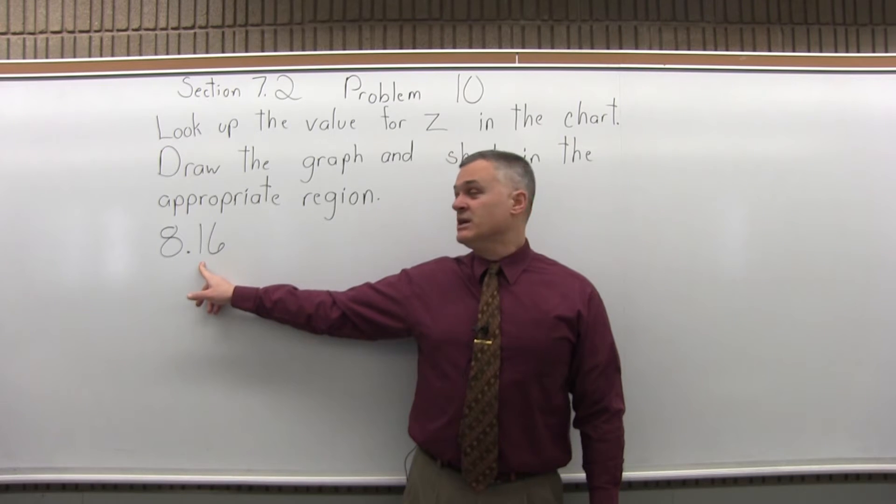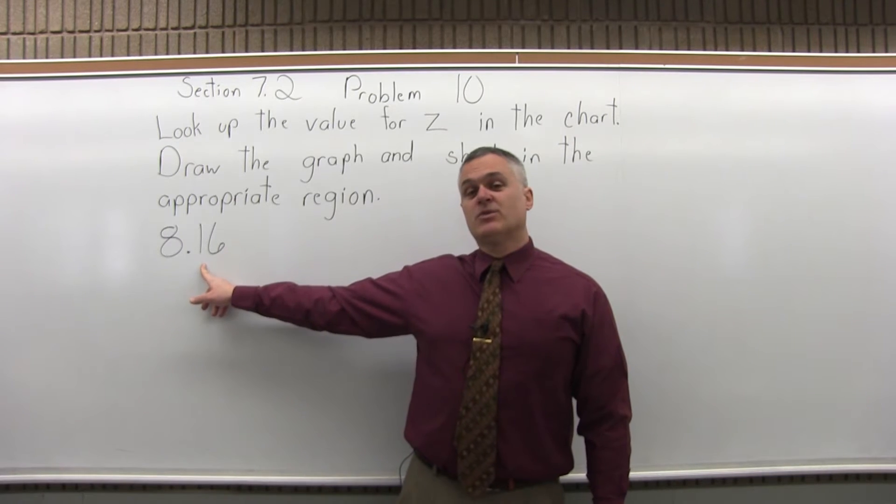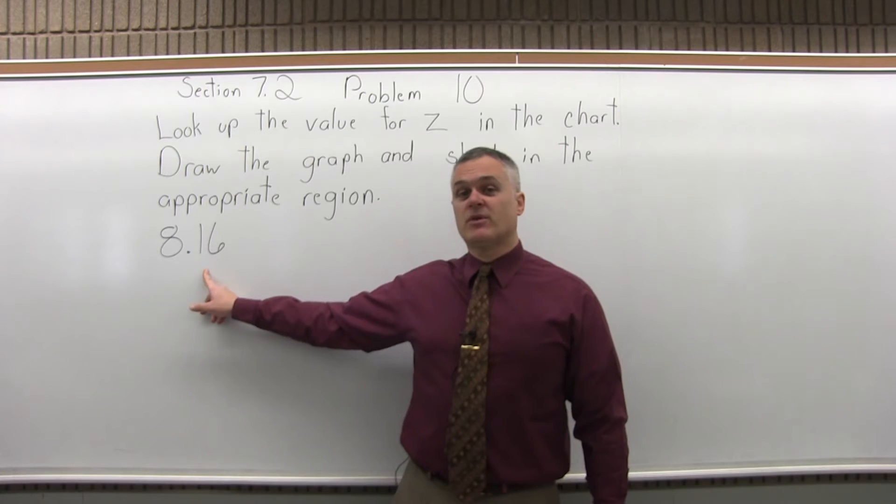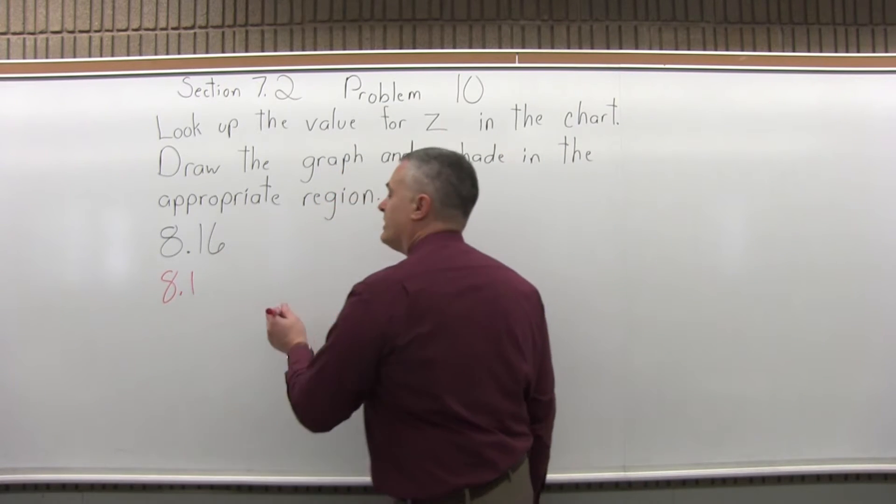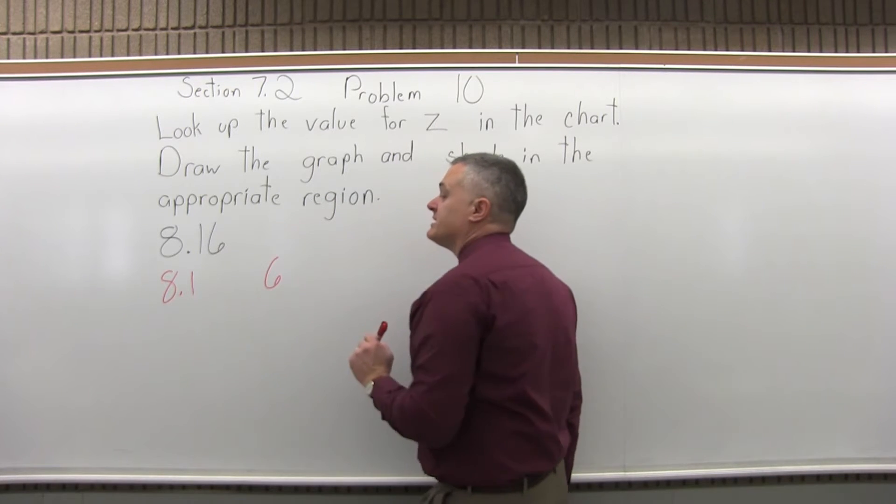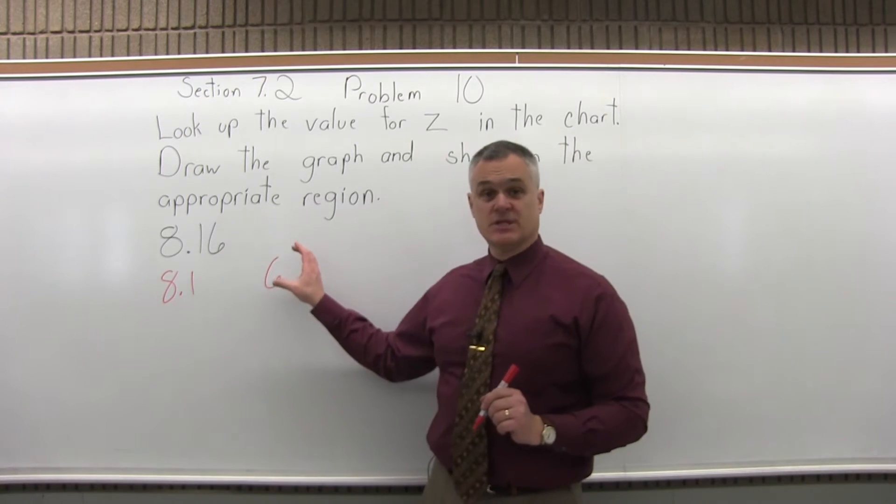Step 2, split the number into two parts by pulling off the rightmost digit. So write this as 8.1, and we will pull off the 6, which was the rightmost digit, so that's step 2.